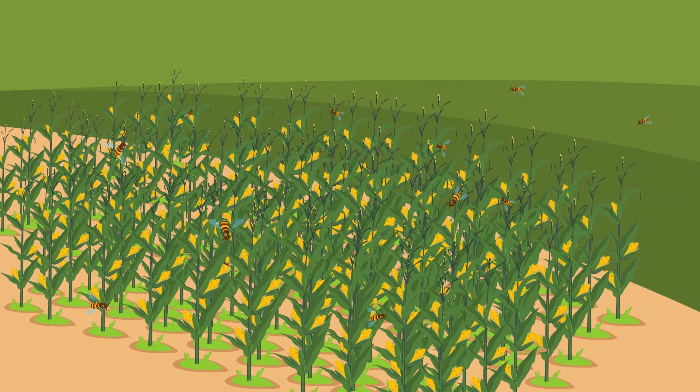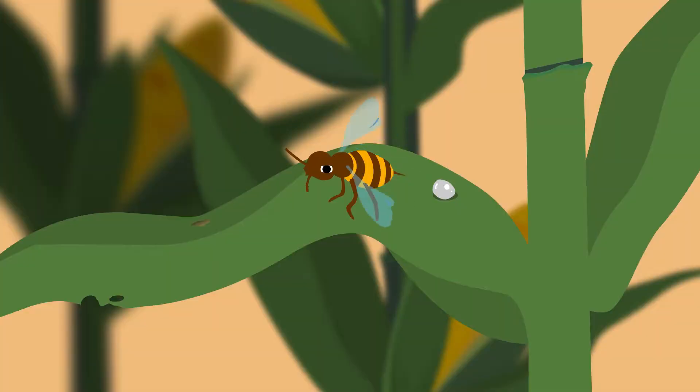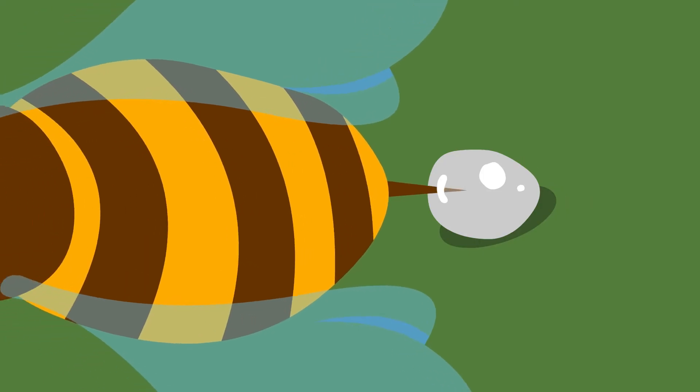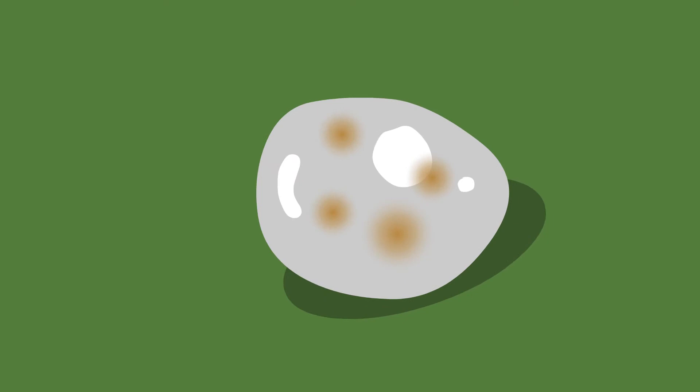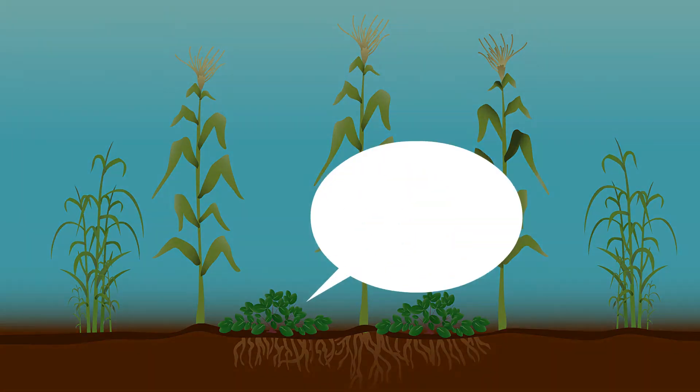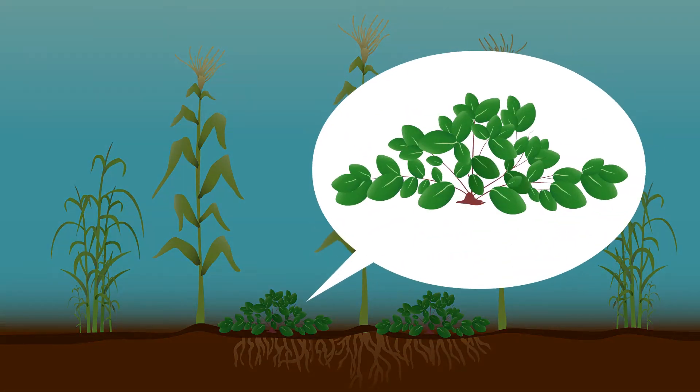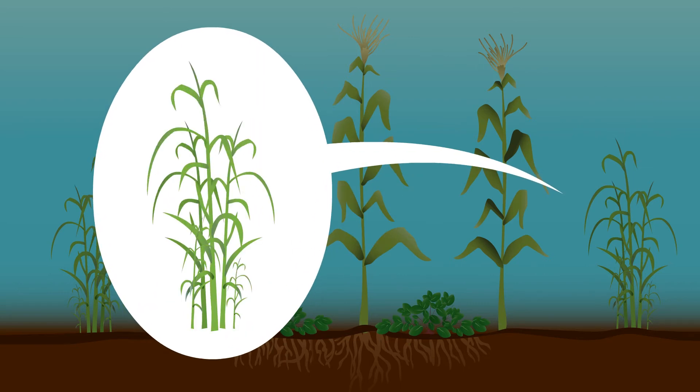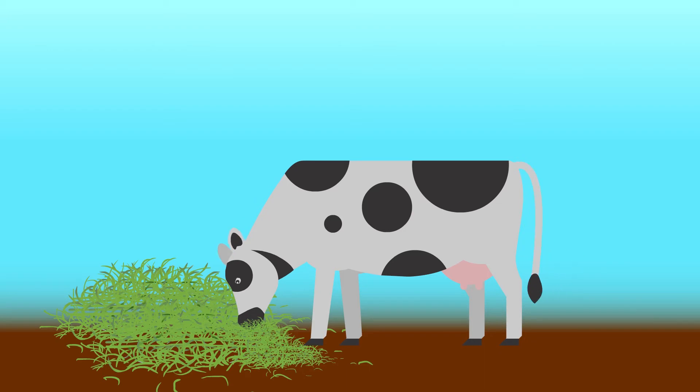Since insecticides are not used, the push-pull approach is compatible with biocontrol, allowing parasitic wasps to survive and attack the stem borers. You can plant specific plants around your maize that will distract and repel the moths. These plants can also help control weeds and can be harvested to feed your livestock.